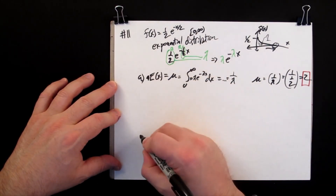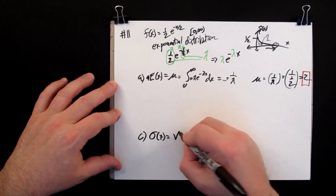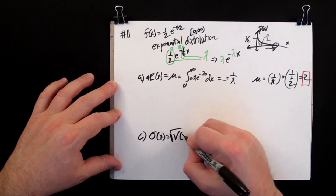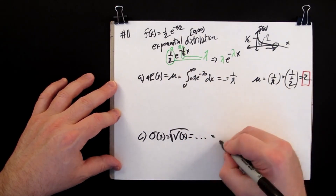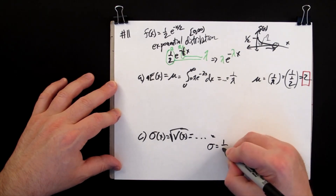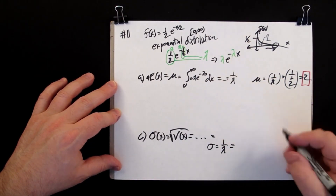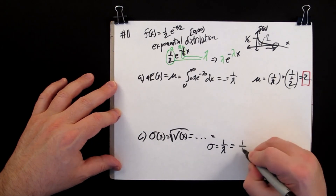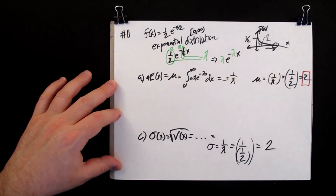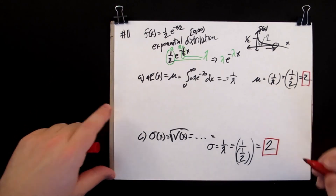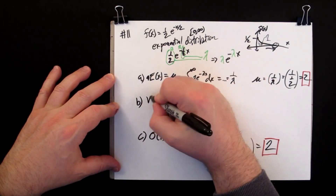There is a handy result for the exponential distribution: the standard deviation sigma is also one over lambda. So in our case, sigma is one over one-half, which equals two. Our standard deviation for this exponential distribution is two.